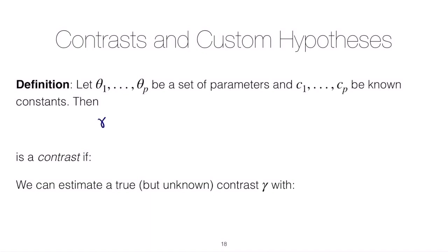Let's define our contrast as gamma and it's just equal to a linear combination, so the sum from i equals 1 up to p of ci times theta i. This thing is a contrast if the sum of the ci's are equal to 0.